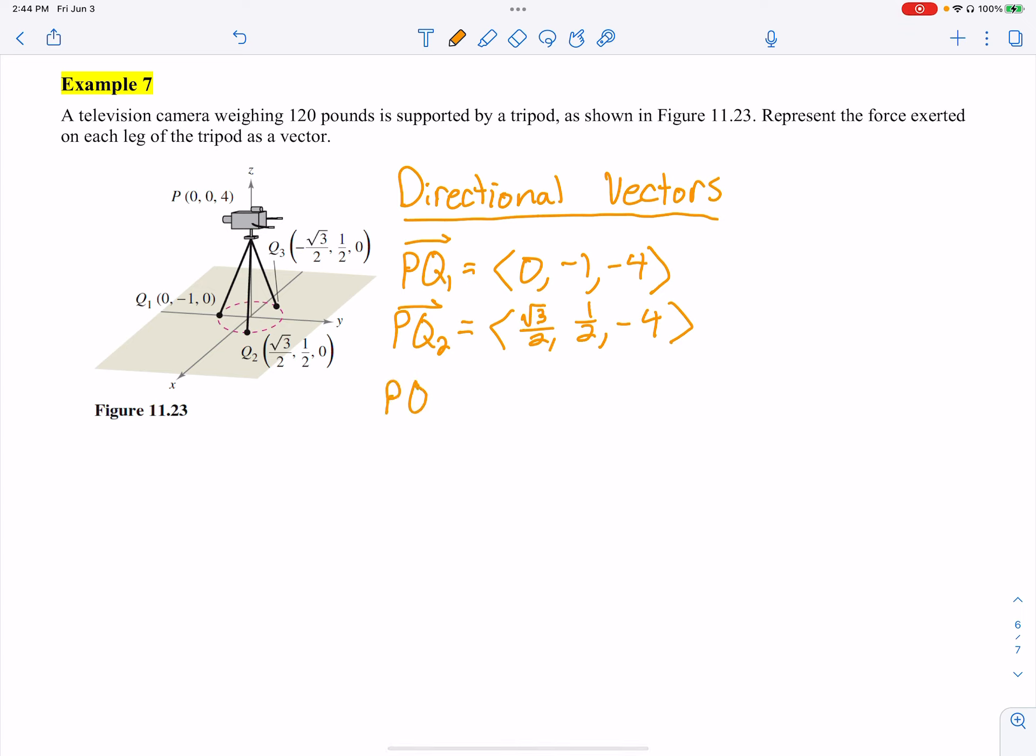The zeros make it real easy. P to Q3, with our vector, we get negative radical 3 over 2, 1 half, and then negative 4.